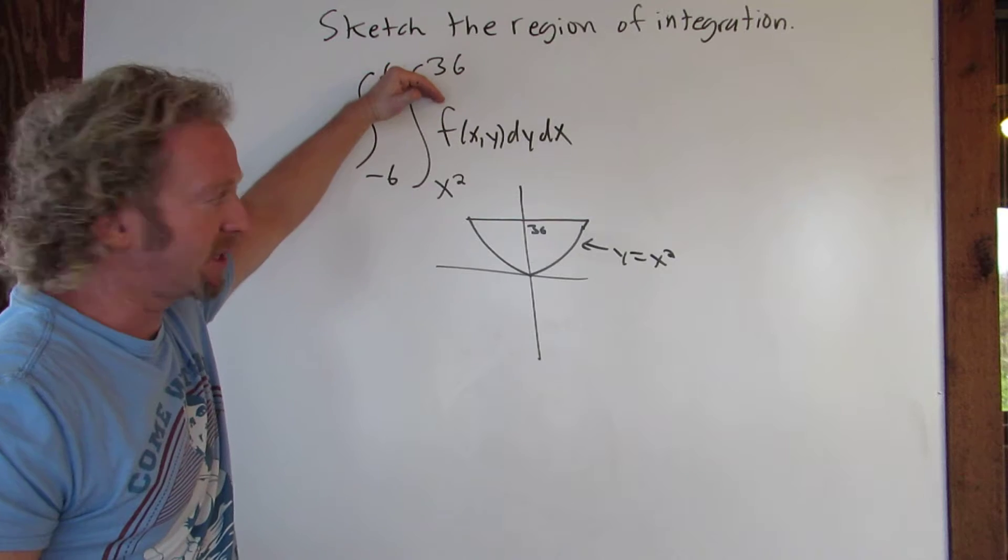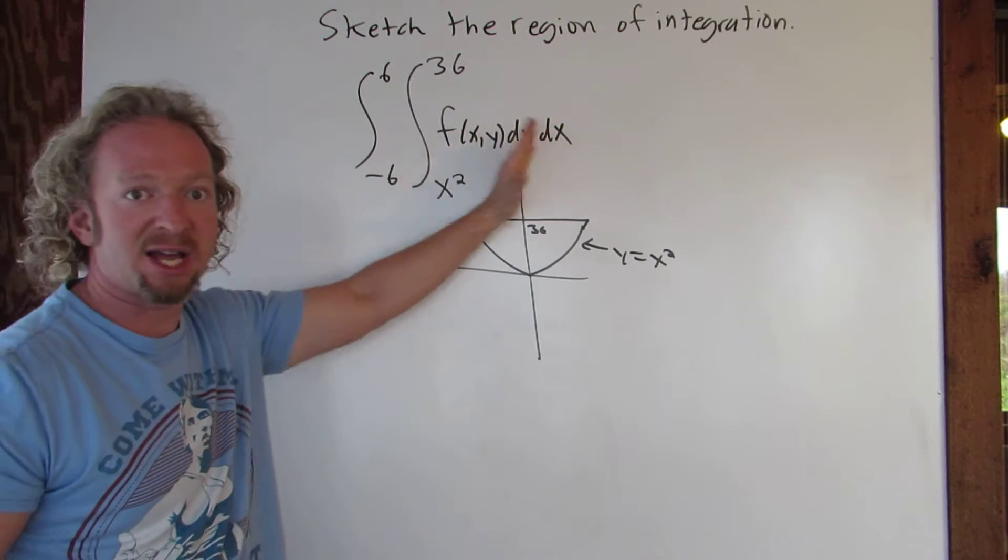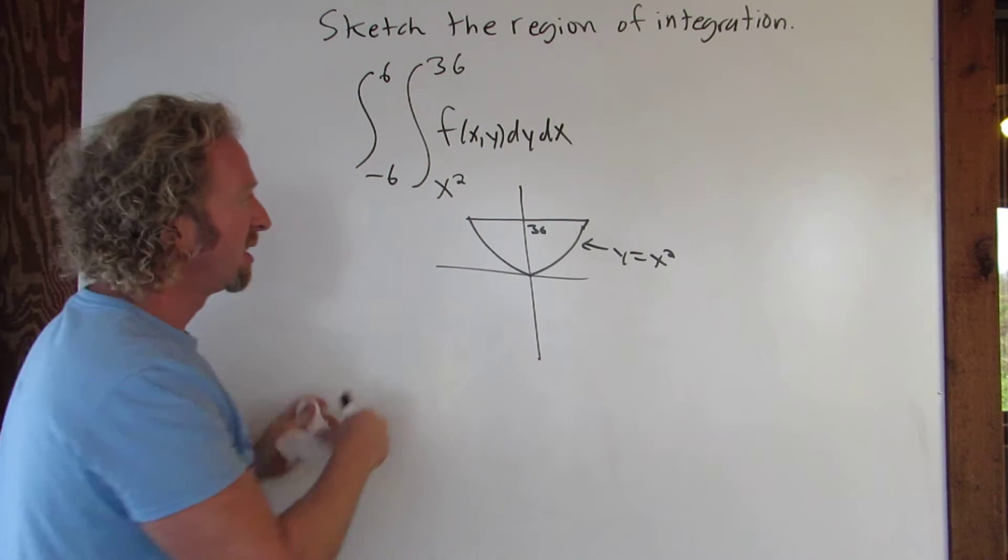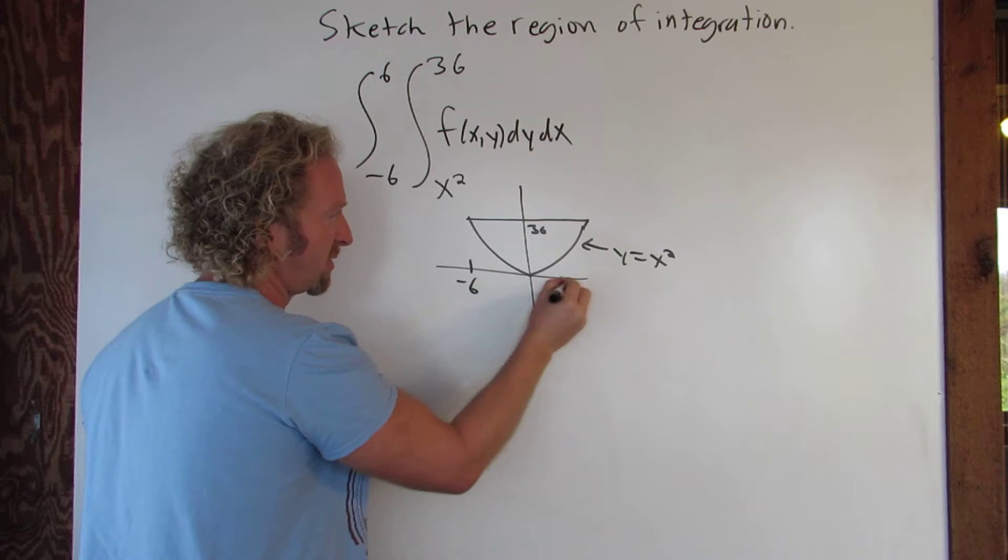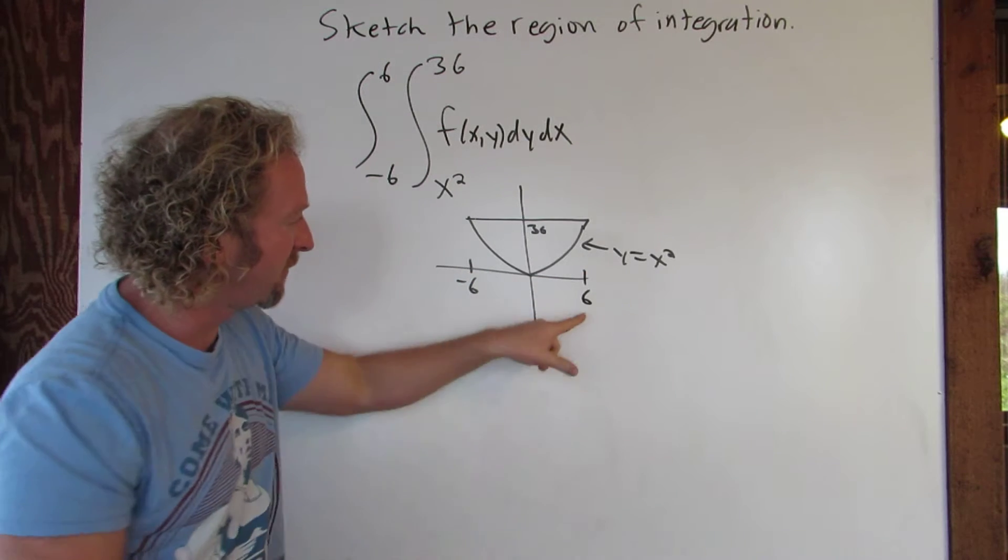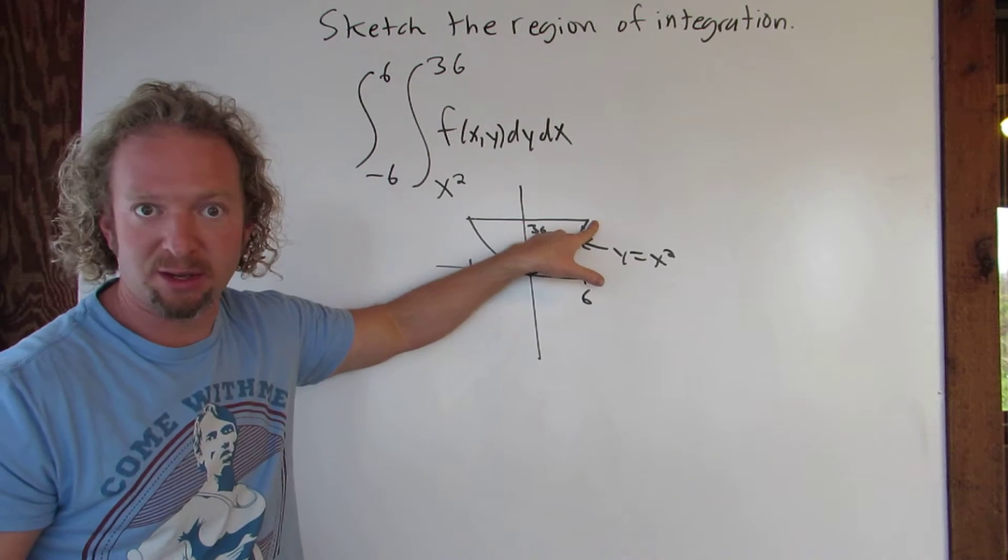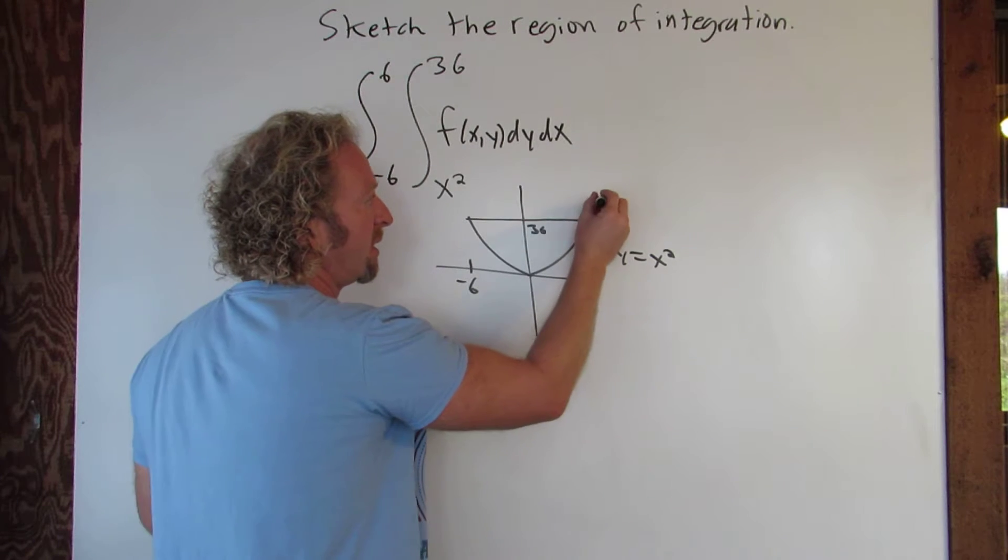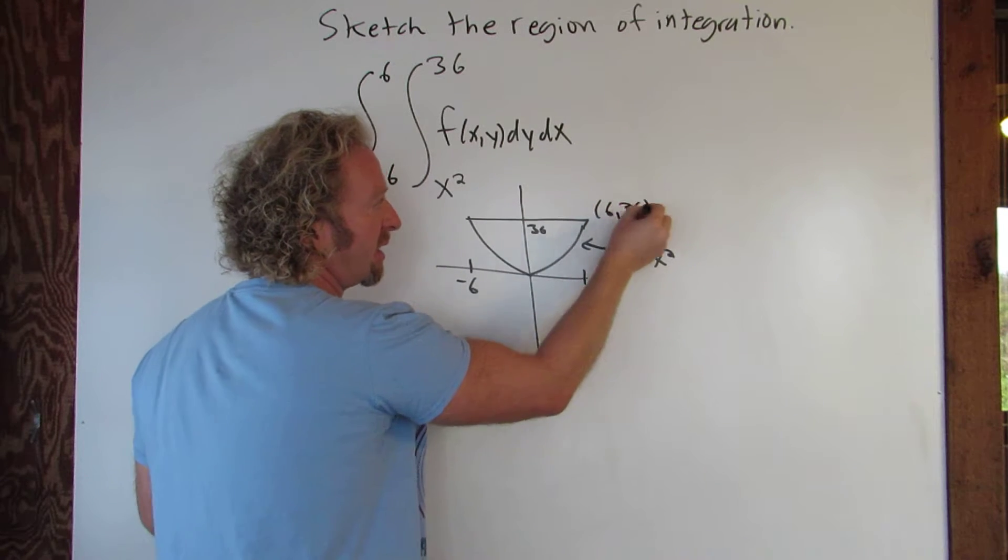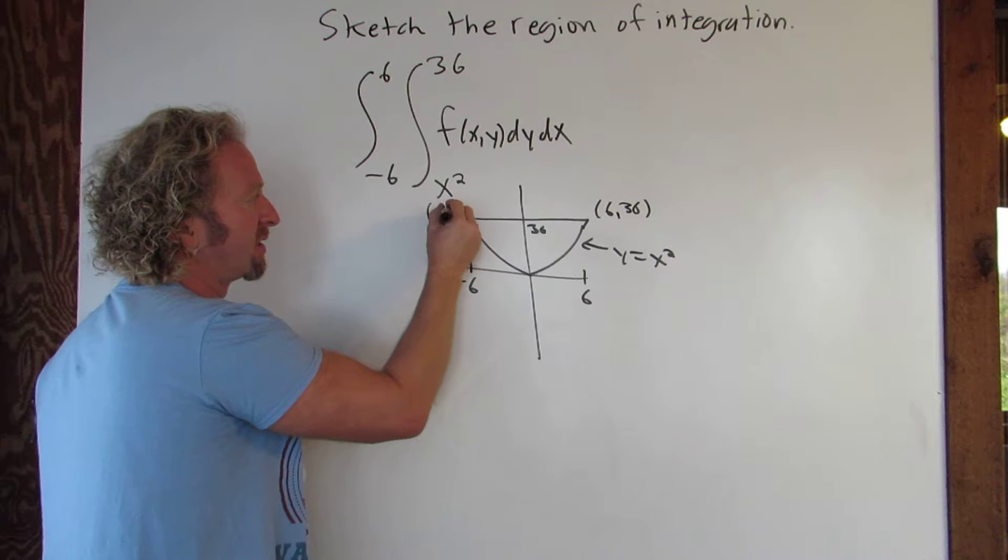Okay so we're going from x squared to 36 and then we're integrating with respect to x from negative 6 to 6. Coincidentally, it's pretty easy to see that these are negative 6 and 6. If you square 6 you get 36, right? That y coordinate there is 6, 36. Likewise here it would be negative 6, 36.